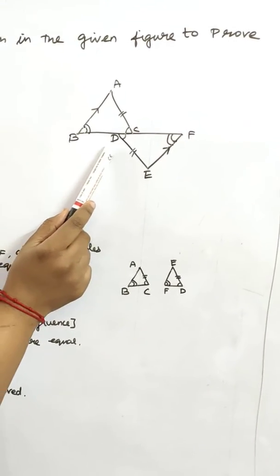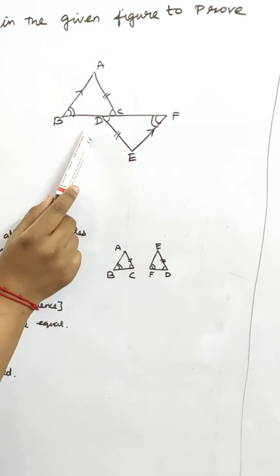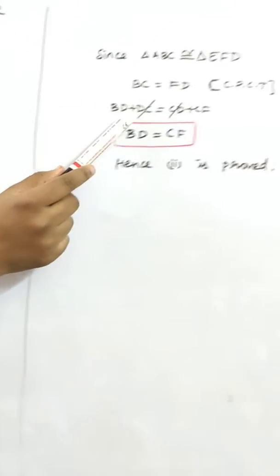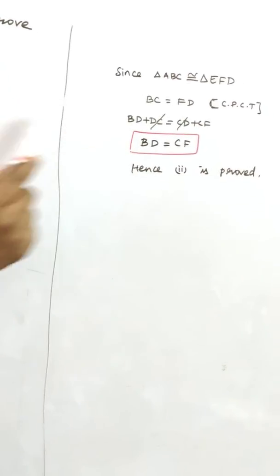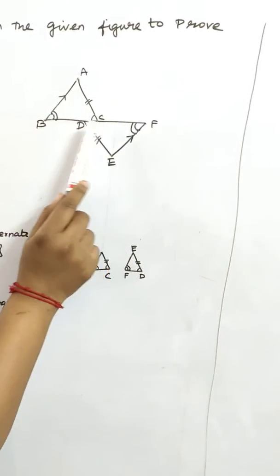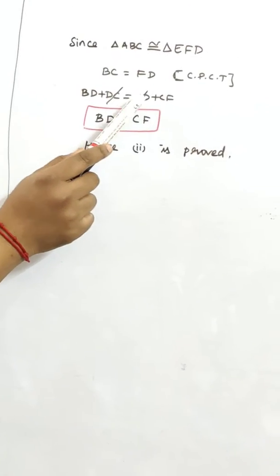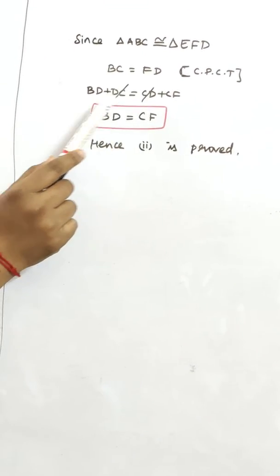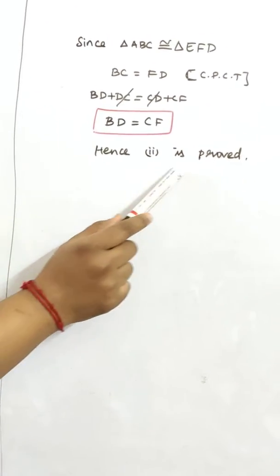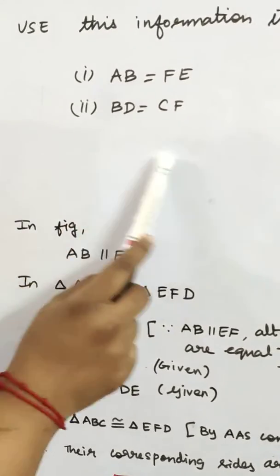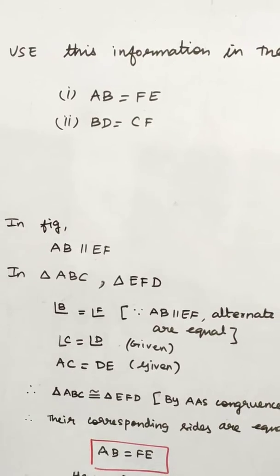Now BC in the figure is BD plus DC. Similarly, FD is DC plus CF. Since BC equals FD, we have BD plus DC equals DC plus CF. Canceling DC from both sides, BD equal to CF. Hence the second part is proved.